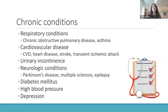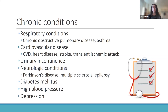The chronic conditions we were interested in all have some research connecting them with falls: respiratory conditions, cardiovascular disease, urinary incontinence, neurologic conditions, diabetes, high blood pressure, and depression. For diabetes, high blood pressure, and depression, participants were also considered to have the condition if they reported taking medication for it, as medications for these three conditions have also been shown to be associated with falls.